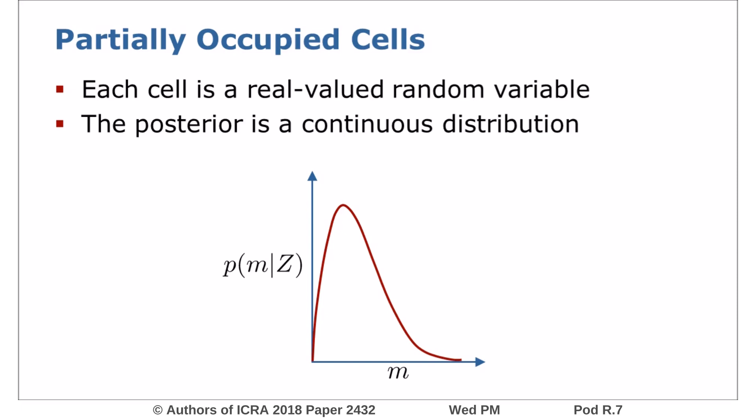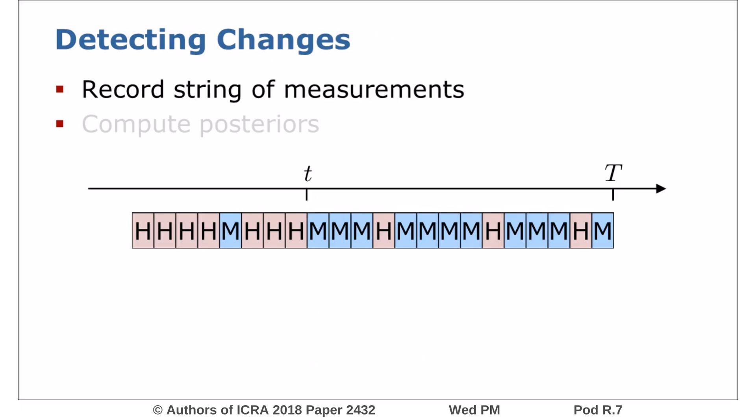With the help of these posteriors, we can now detect changes in the environment as follows. Suppose the laser has reported a series of measurements for each cell. In the simplest case, this can be stored as a string of hits and misses. For each point in time t, we can then compute the posterior distribution conditioned on all measurements before t and the posterior based on all measurements after t.